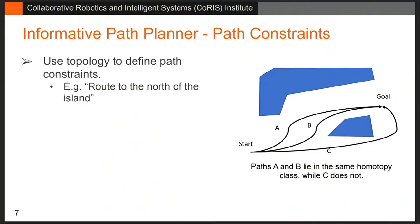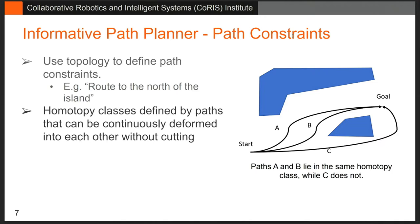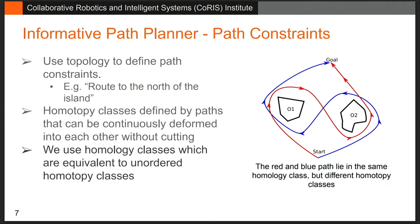We use topological constraints because they allow us to say things like 'route to the north of the island.' Using homotopy classes, paths A and B are in the same class if they can be continuously deformed into each other — like a string along path A that you can deflect into B without cutting. We use homology classes, which are similar but unordered, so either a blue or red path is valid for an instruction like 'north of object one, south of object two.'